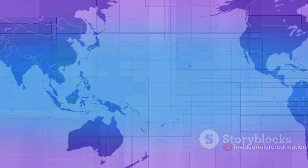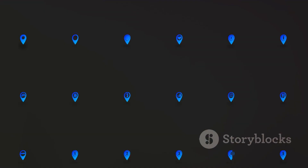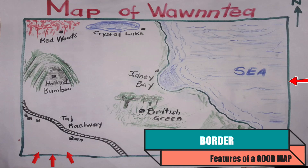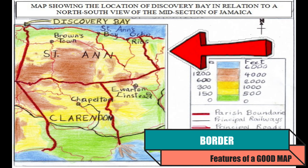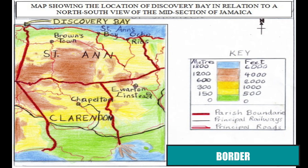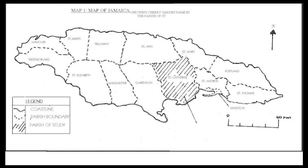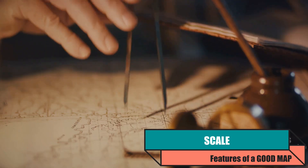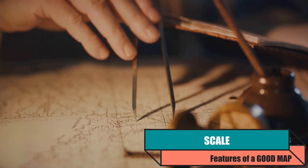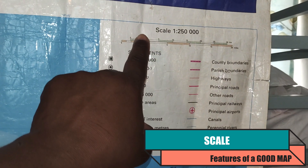All good maps share five essential features. They all have a border, providing a neat frame for the information within — borders show the limits of the area being studied. They all also have a scale; the scale helps users measure distances on the map.